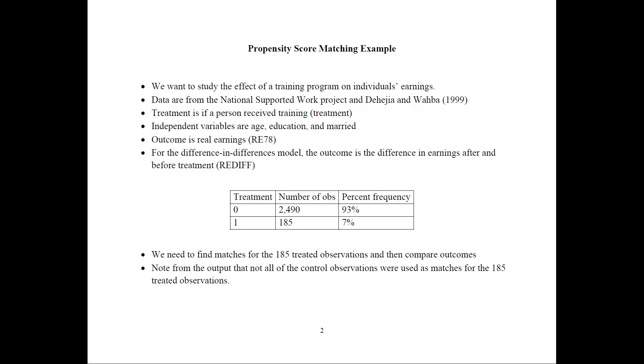In this example, we would like to study the effects of a training program on individuals' earnings. The data come from the National Supported Work Project. The treatment here would be if a person received the training. The treated observations would be those that received the training, and the controlled observations would be those that did not receive the training.